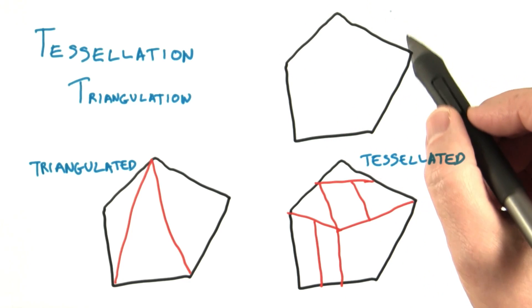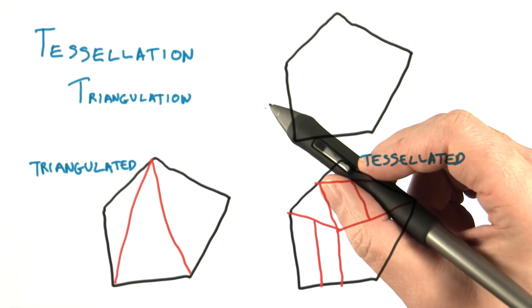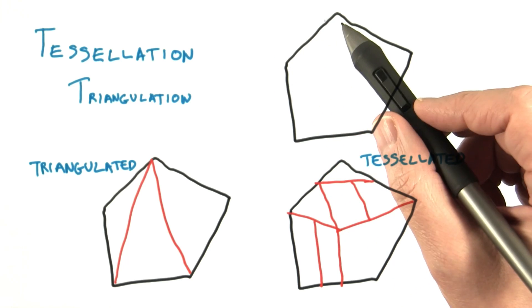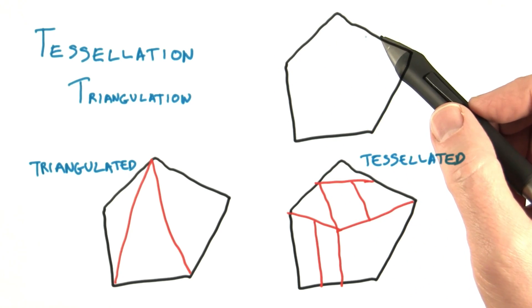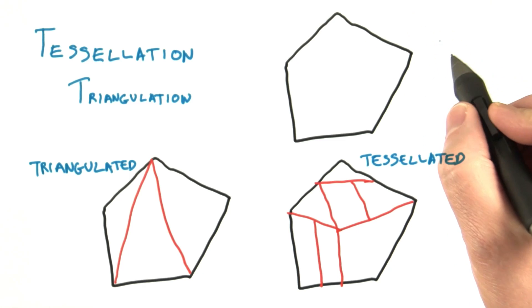Once upon a time, some older graphics hardware from the 1980s supported objects such as polygons or even more complex objects. For example, NVIDIA's first chip, the NV1, supported ellipsoids as a basic primitive.